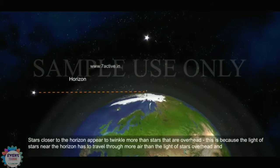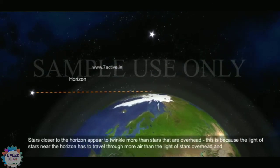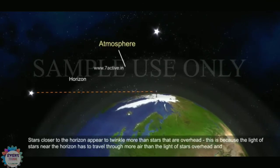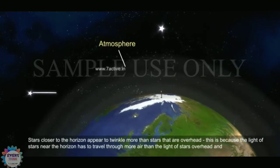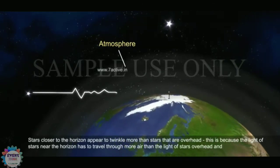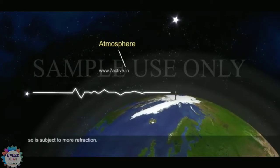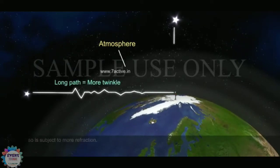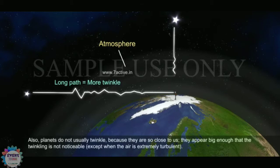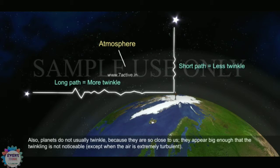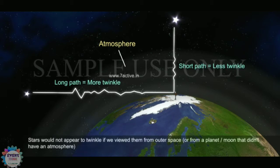Stars closer to the horizon appear to twinkle more than stars that are overhead. This is because the light of stars near the horizon has to travel through more air than the light of stars overhead, and so is subject to more refraction. Also, planets do not usually twinkle because they are so close to us — they appear big enough that the twinkling is not noticeable, except when the air is extremely turbulent. Stars would not appear to twinkle if we viewed them from outer space or from a planet or moon that didn't have an atmosphere.